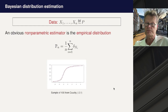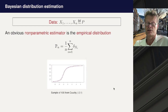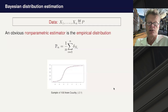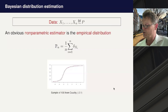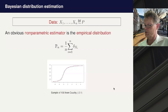In Bayesian distribution estimation, you get as data a sample from some distribution P and know nothing about P — you want to estimate it. If you're not a Bayesian, the empirical distribution function is the natural approach: it puts weight 1/n at all observations and approximates P by the law of large numbers. For one-dimensional observations you can use the empirical CDF. In an example with a sample of size 100 from a Cauchy distribution, the empirical distribution works fairly well.